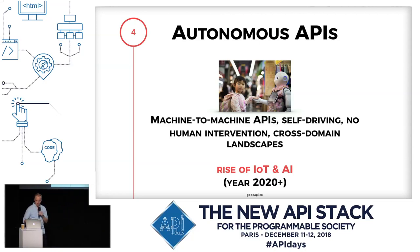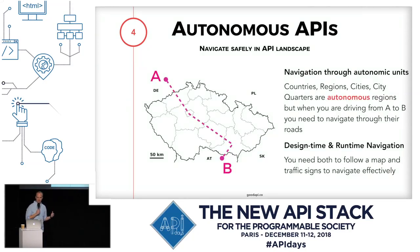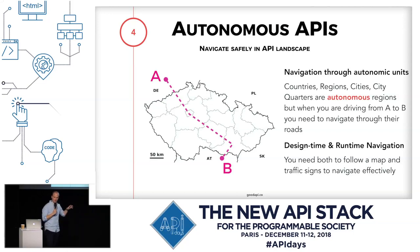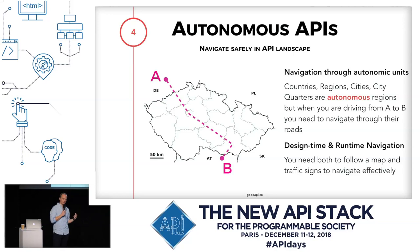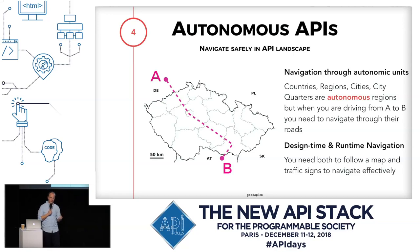This will be more true with IoT and AI. Think about the physical landscape — when you drive from Germany to Austria through Czech Republic, you are driving through autonomous regions: Germany, Czech Republic, Austria, cities, districts within the cities, your car. Yet you are still able to navigate through that landscape. You can do it because you have two things: design time knowledge and runtime knowledge. Design time is when you look at the map and plan your route. Runtime knowledge is simply driving the car, looking out the window, following the traffic signs and the road.